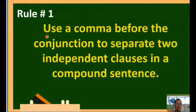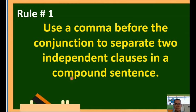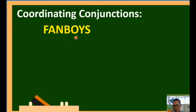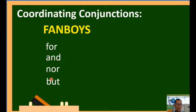Rule number one: use a comma before the conjunction to separate two independent clauses in a compound sentence. Gagamit tayo ng comma bago ang conjunction para ihiwalay ang dalawang independent clauses sa isang compound sentence. We are going to use coordinating conjunctions in connecting two independent clauses. The conjunctions here have an acronym FANBOYS: F for 'for', A for 'and', N for 'nor', B for 'but', O for 'or', Y for 'yet', and S for 'so'.